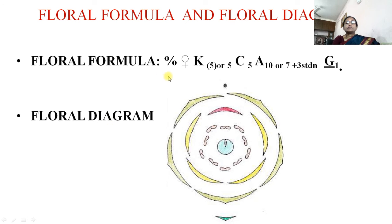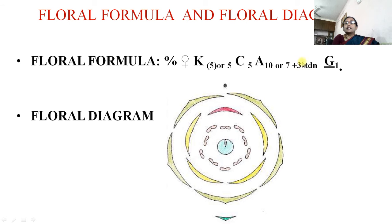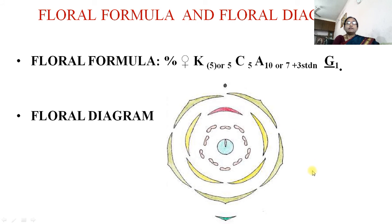Floral formula and floral diagram: the flower is zygomorphic, bisexual; calyx 5 (sometimes fused, sometimes free); corolla 5; androecium 10 or 7+3 (where 3 are staminodes); gynoecium monocarpellary with superior ovary. This is the floral diagram of the family Caesalpiniaceae.